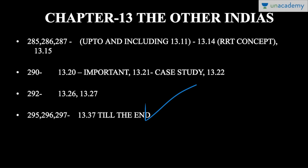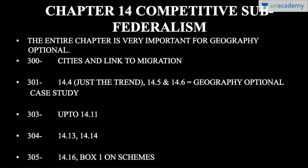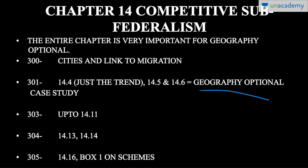Pages 295-297, from paragraph 13.37 till the end, should be read — it is an important chapter. The last chapter of the Economic Survey is chapter fourteen: 'From Competitive Federalism to Competitive Subfederalism: Cities as Dynamos.' This entire chapter is very important, especially for Geography optional. Page 300 talks about cities and their link to migration. Page 301, paragraph 14.4 covers trends you are supposed to read, and paragraphs 14.5 and 14.6 provide Geography optional case studies.